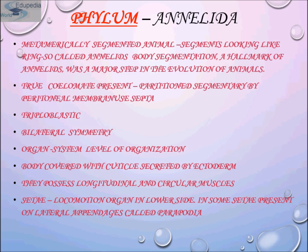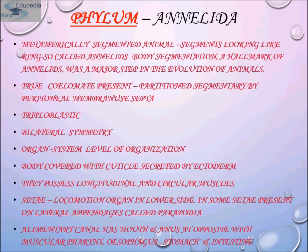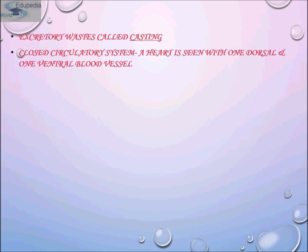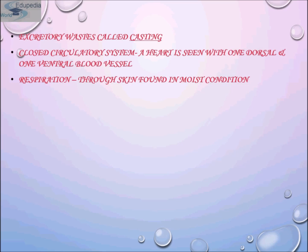The segmented compartments of the coelom are usually separated from each other by thin sheets of tissue called septa, which are perforated by the gut and by blood vessels. Except in leeches, the coelom is fluid-filled and functions as a skeleton, providing the animal with the rigidity and resistance necessary for muscular movement. If the worm is punctured, it loses its ability to move properly, since functioning of the body muscles is dependent on maintenance of fluid volume in the coelom.